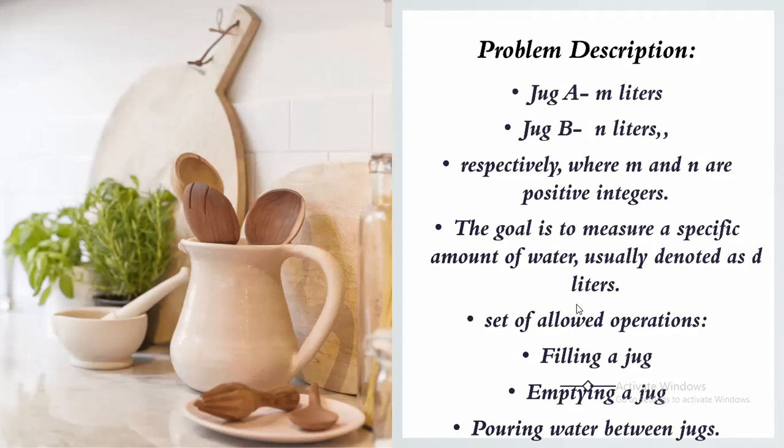The goal is to measure a specific amount of water, usually denoted as d liters, using only these two jugs and a set of allowed operations which typically include filling a jug. We can fill one of the jugs to its maximum capacity from the water supply. Next is emptying the jug. We can empty the contents of one of the jugs onto the ground or into a drain.